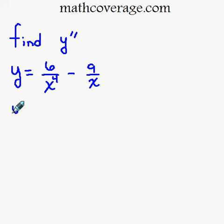So I'm going to rewrite this as y equals 6 times, bring x to the 4th to the top, becomes x to the negative 4, minus 9, bringing x to the top, x to the negative 1.